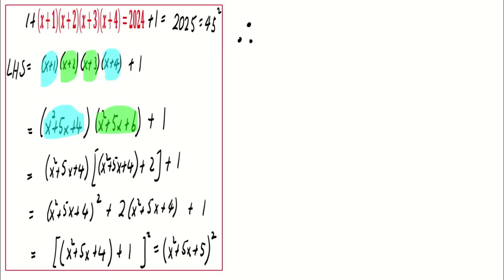Therefore, we get (x² + 5x + 5)² equals the square of 45. This means that x² + 5x + 5 equals 45 or negative 45.